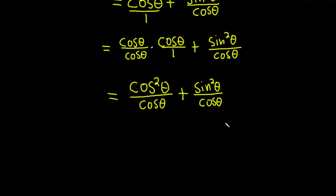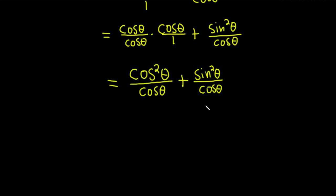So now we can add these. These are both fractions over cosine, so we can just add straight across in the numerators. This will be cosine squared of theta plus sine squared theta, and it's all being divided by cosine theta.